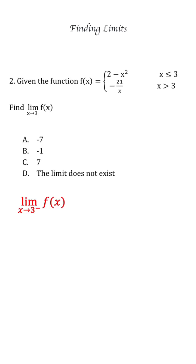So let's find first limit as x approaches 3 from left. So we are going to use 2 minus x squared, which is related to the part which is smaller than 3. So we write equal 2 minus 3 squared, which is negative 7.